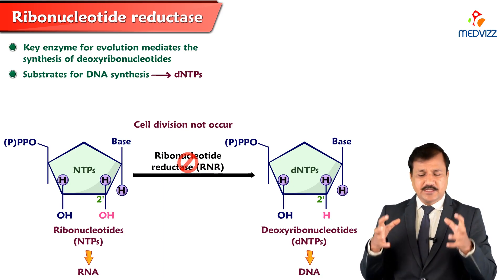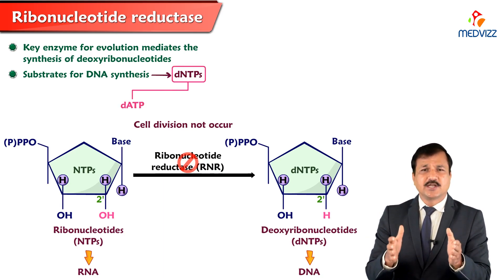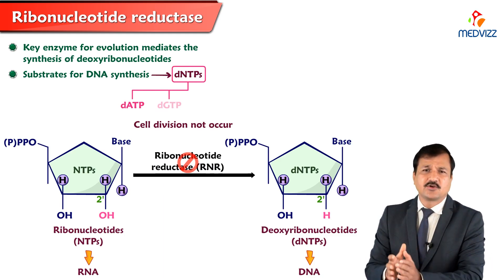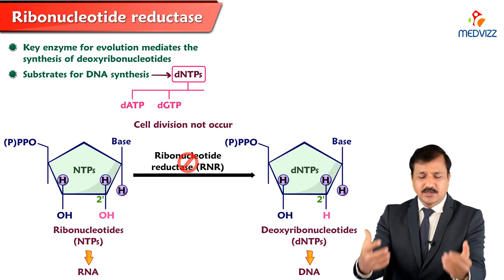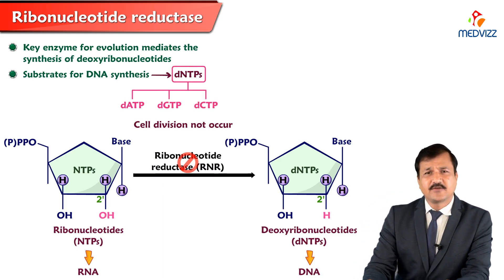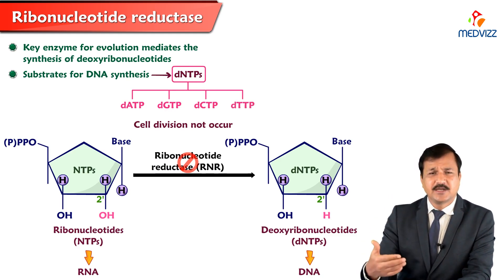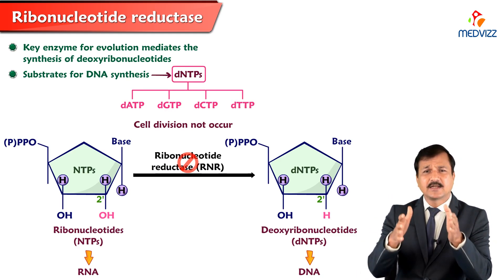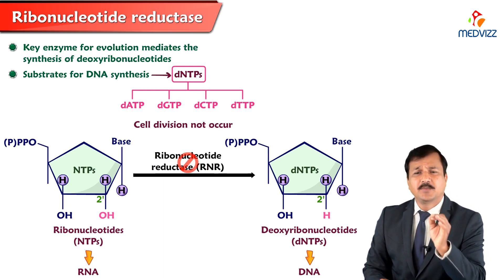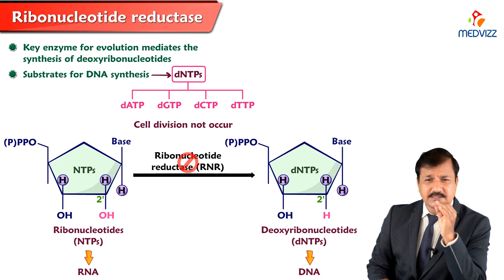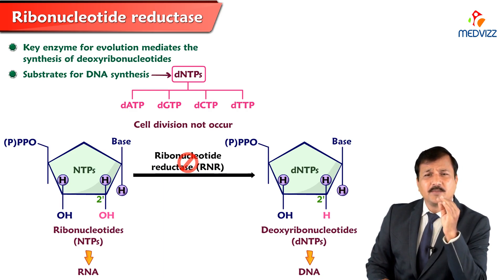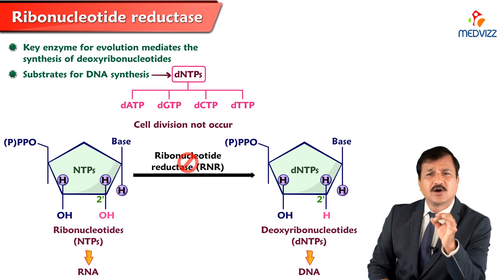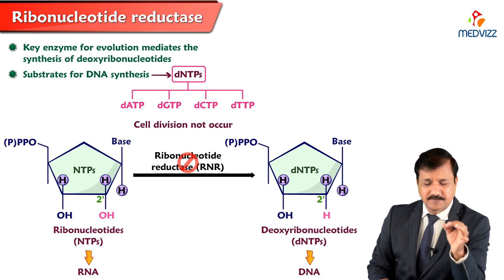The substrates for DNA synthesis are deoxynucleotide triphosphates — dATP, dCTP, dTTP, dGTP — and all of these must come from the ribonucleotide reductase enzyme. Ribonucleotide reductase will also ensure there is a balanced synthesis of all deoxynucleotide triphosphates, and it is the only enzyme that can do it.